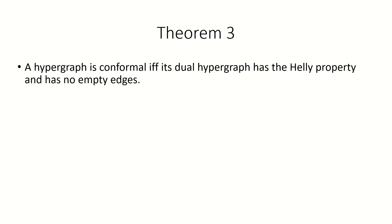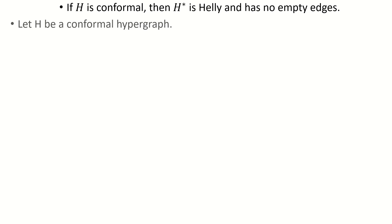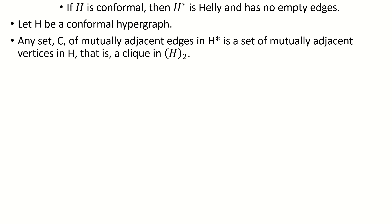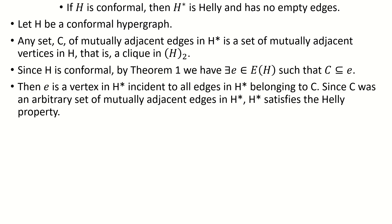There's one last theorem I'd like to show you, giving us yet another way to describe conformal hypergraphs. The theorem is: a hypergraph is conformal if and only if its dual is Helly and has no empty edges. Recall from a previous video that a hypergraph is Helly if for every set of mutually adjacent edges, there's some vertex that is incident to all of those edges. Suppose we have a conformal hypergraph h. Any set of mutually adjacent edges in the dual of h corresponds to a set of mutually adjacent vertices in h, and by theorem 1 and h's conformality, there's an edge in h that contains that set. So for every set of mutually adjacent edges in the dual of h, there's a vertex contained by all edges in that set — meaning the dual has the Helly property. Since conformal hypergraphs do not have isolated vertices, their duals will not have empty edges, proving this direction.